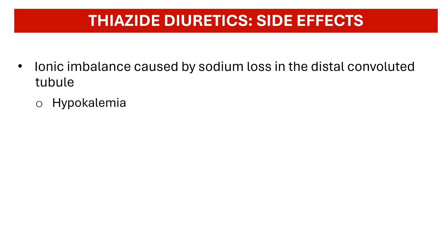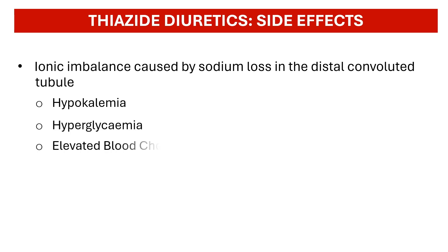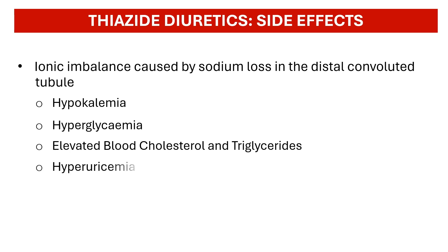These drugs tend to interfere with sugar and fat metabolism, causing hyperglycemia and an increase in blood cholesterol and triglyceride levels. Thiazide diuretics also cause uric acid to be retained in the blood, and chronic hyperuricemia could lead to gout.